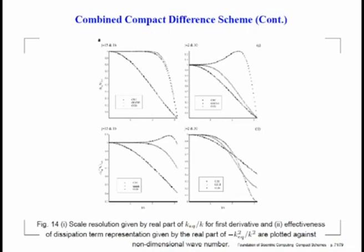If we now look at the boundary points, the right panels show the properties for j equal to 2 and the corresponding right-hand side point j equal to 30. Once again, CD2 is plotted as a reference. You can find out why we have been focusing on compact schemes: CD2 can resolve without attenuation only a small part, while the other schemes give you about almost 10 times more. In a 2D or 3D problem, each direction gives a benefit of 8 to 10 times.